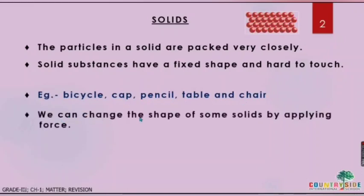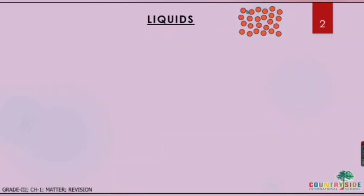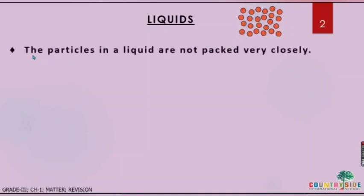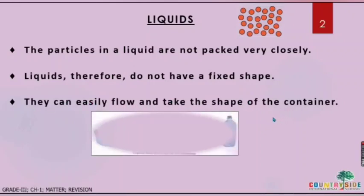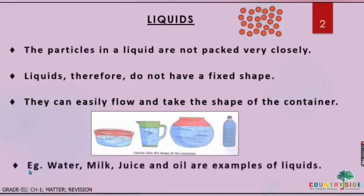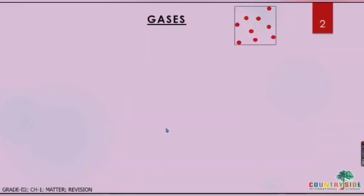Solid substances have a fixed shape and are hard to touch. Examples are bicycle, cap, pencil, table, and chair. We can change the shape of some solids by applying force. Second is liquid. In the diagram you can see the molecules or tiny particles are moving away from each other and the intermolecular space is now increased. Therefore liquids do not have a fixed shape. The particles in a liquid are not packed very closely.